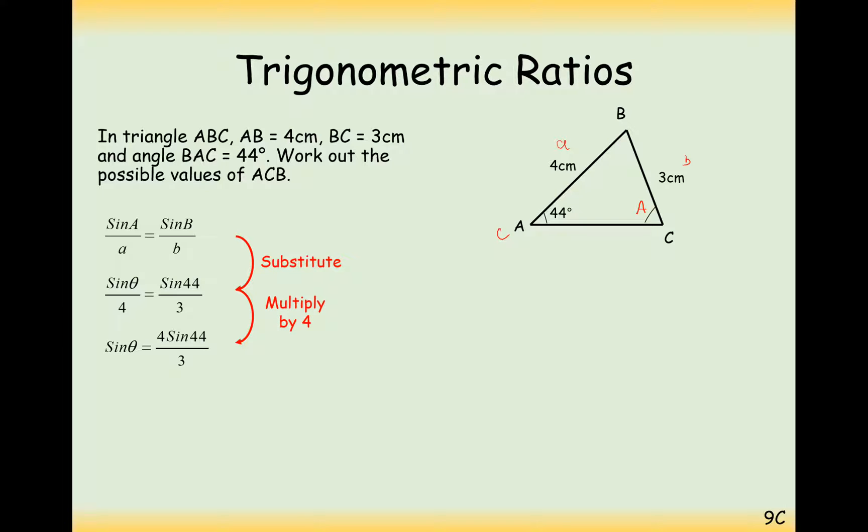You're going to get sine theta equals 4 sine 44 over 3. Find out the value of that, and you get sine of theta is 0.9262, and inverse the sine, and you get about 68 degrees.